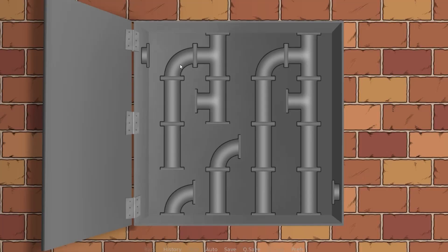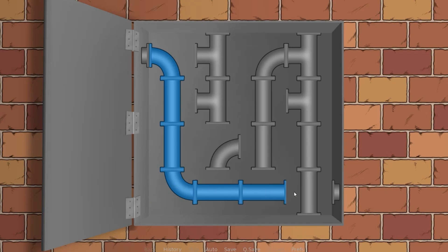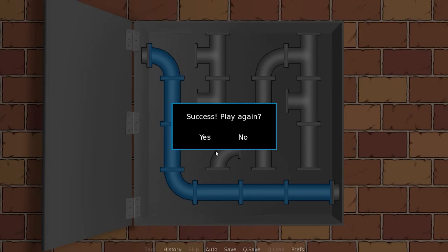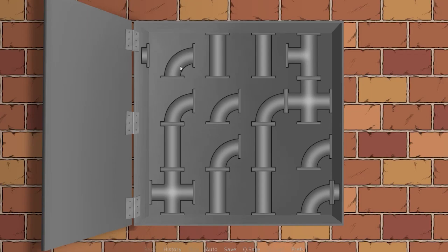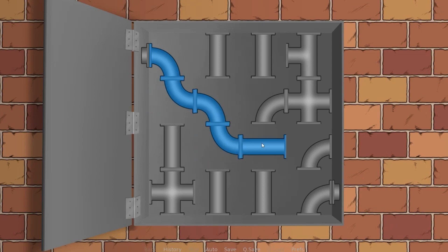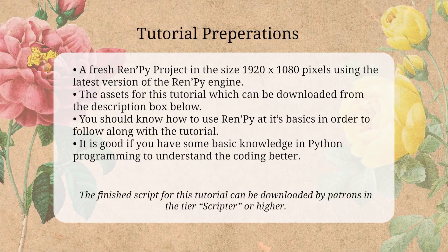This is going to be a little more advanced tutorial than some of the previous ones, as it requires more code and a bit more math than usual. But no worries — I'll get you through what each section of code does and we'll visualize some of it in the video to make it easier to understand. To follow along with the tutorial, you're going to need a fresh Ren'Py project in the size 1920x1080 pixels using the latest version of the Ren'Py engine.